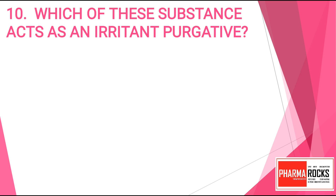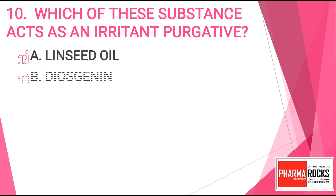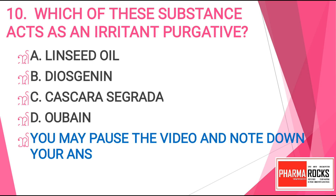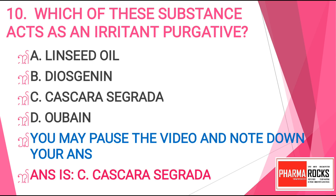Question 10: Which of these substances acts as an irritant purgative? Option A: linseed oil, Option B: diosgenin, Option C: Cascara Sagrada, or Option D: ouabain. You may pause the video and note down your answer. The correct answer for this question is Option C, Cascara Sagrada.